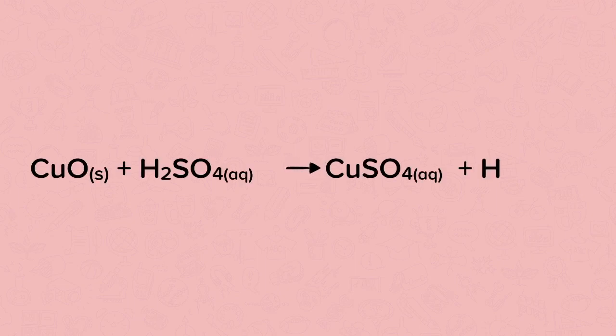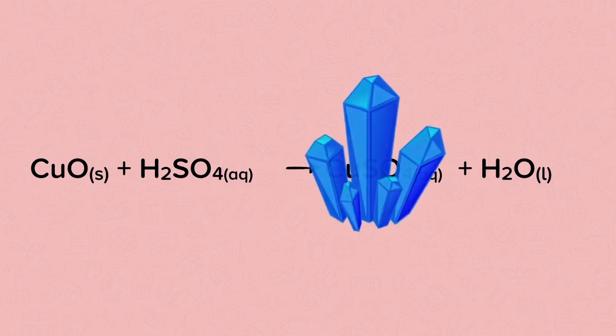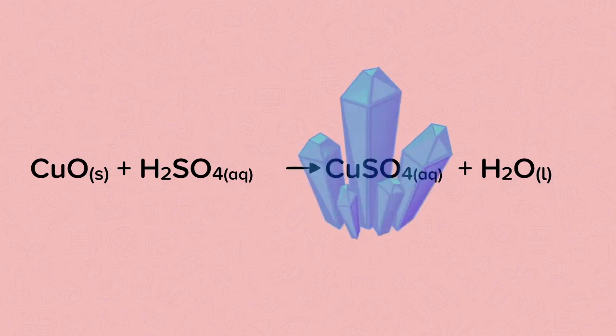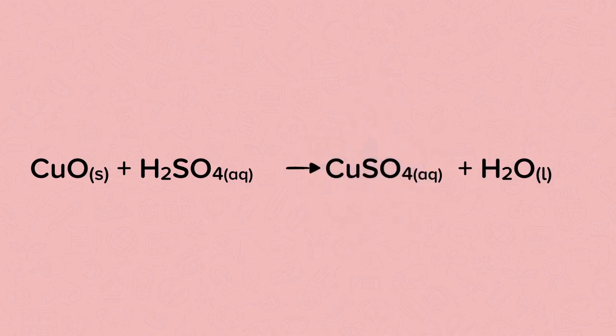Here we have a reaction between solid copper oxide and aqueous sulfuric acid. This will make aqueous copper sulfate and liquid water. You may have carried out this reaction yourself, and evaporation or crystallization can be used to make blue copper sulfate crystals.